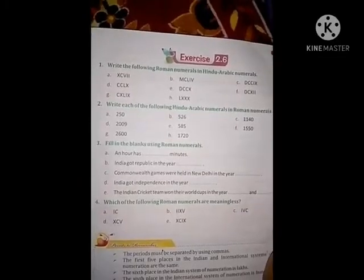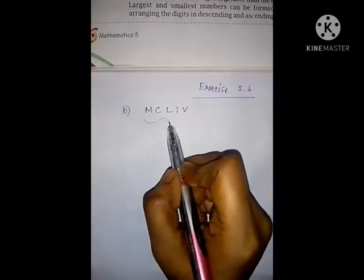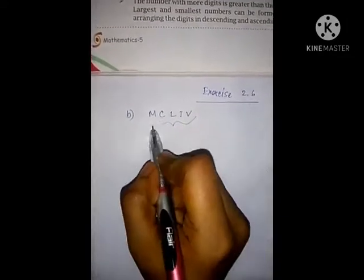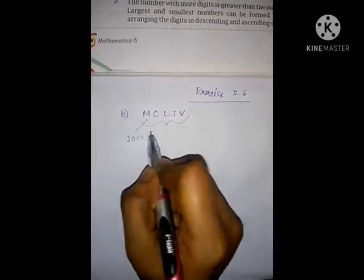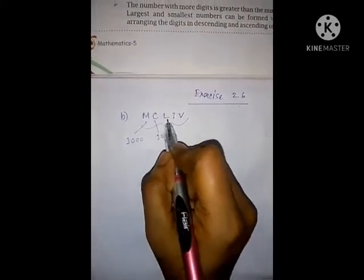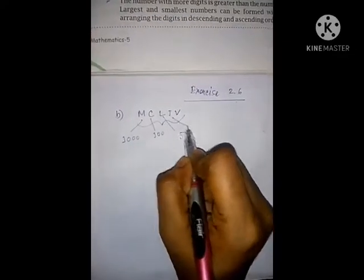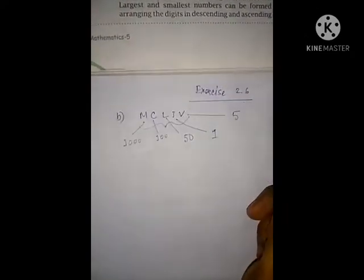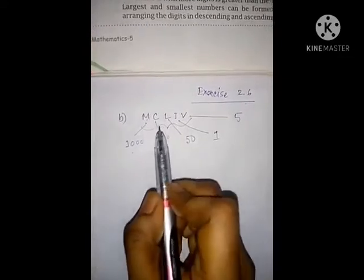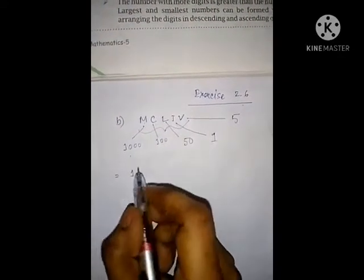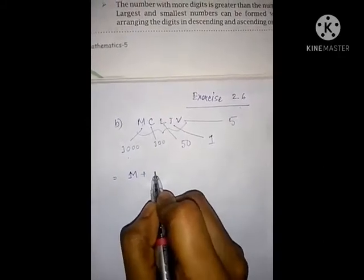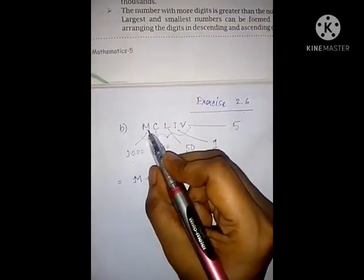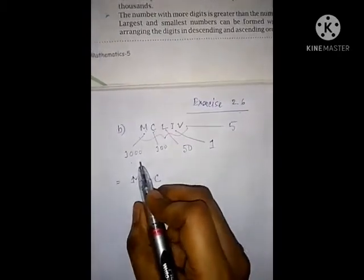Let's take example B. First we identify the value of each symbol using the table: M is 1000, C is 100, L is 50, I is 1, and V is 5. Now, M is greater than C, so we add M plus C. C is greater than L, so we add that too.